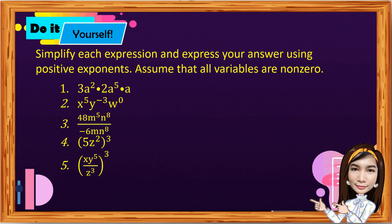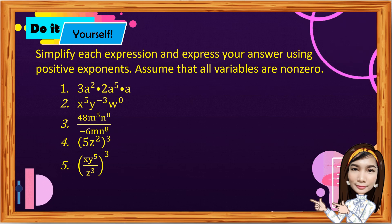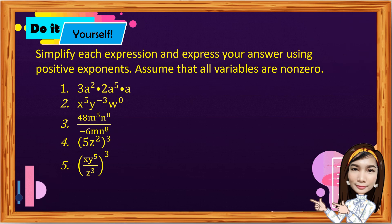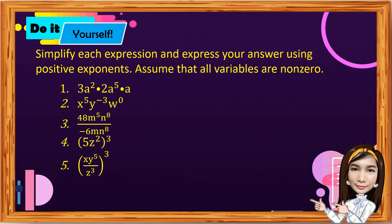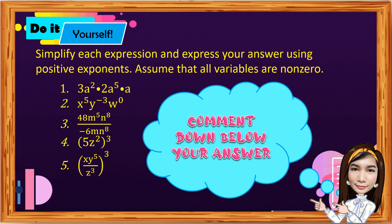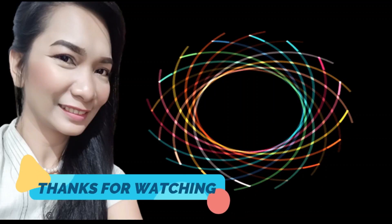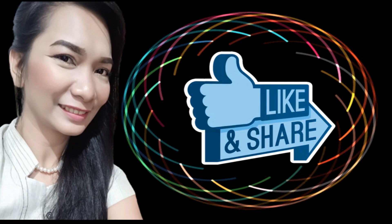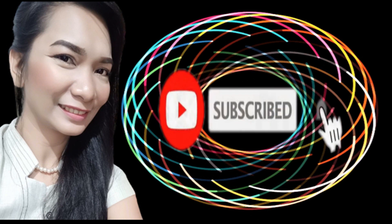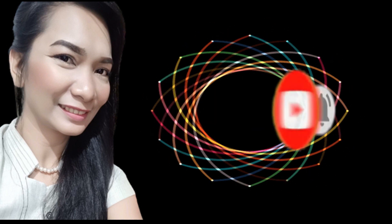Now it's your turn — do it yourself! Simplify each expression and express your answer using positive exponents. Assume all variables are non-zero. Number 1: 3a squared times 2a to the 5th times a. Number 2: x to the 5th, y to the negative 3, w raised to 0. Number 3: 48m to the 5th n to the 8th divided by negative 6mn to the 8th. Number 4: the quantity of 5z squared to the 3rd power. Number 5: the quantity of xy to the 5th over z cubed, to the 3rd power. Don't forget to comment your answers below. Happy learning! Thanks for watching — please like and share, and subscribe to my channel and click the bell button so you'll be notified whenever I upload a new video.